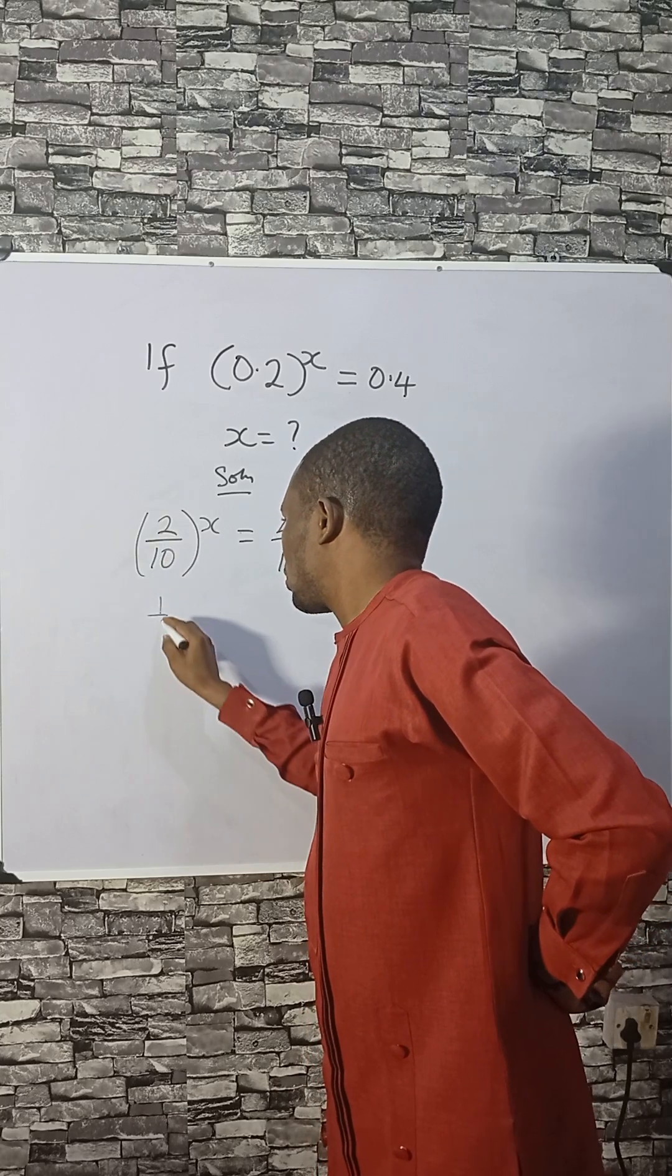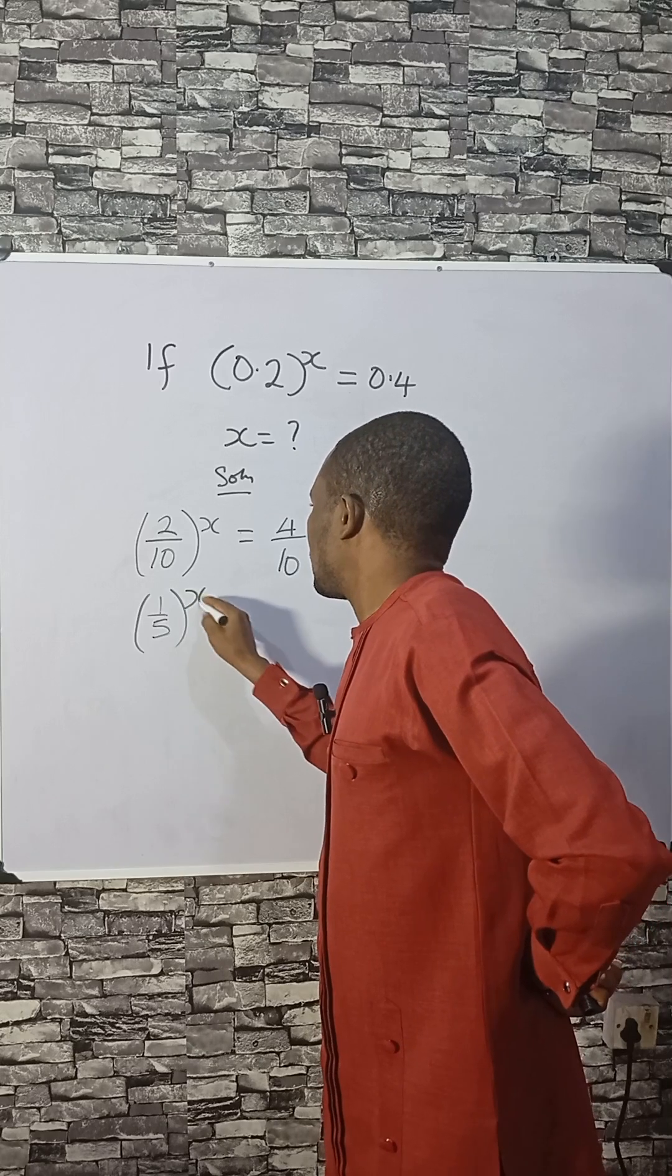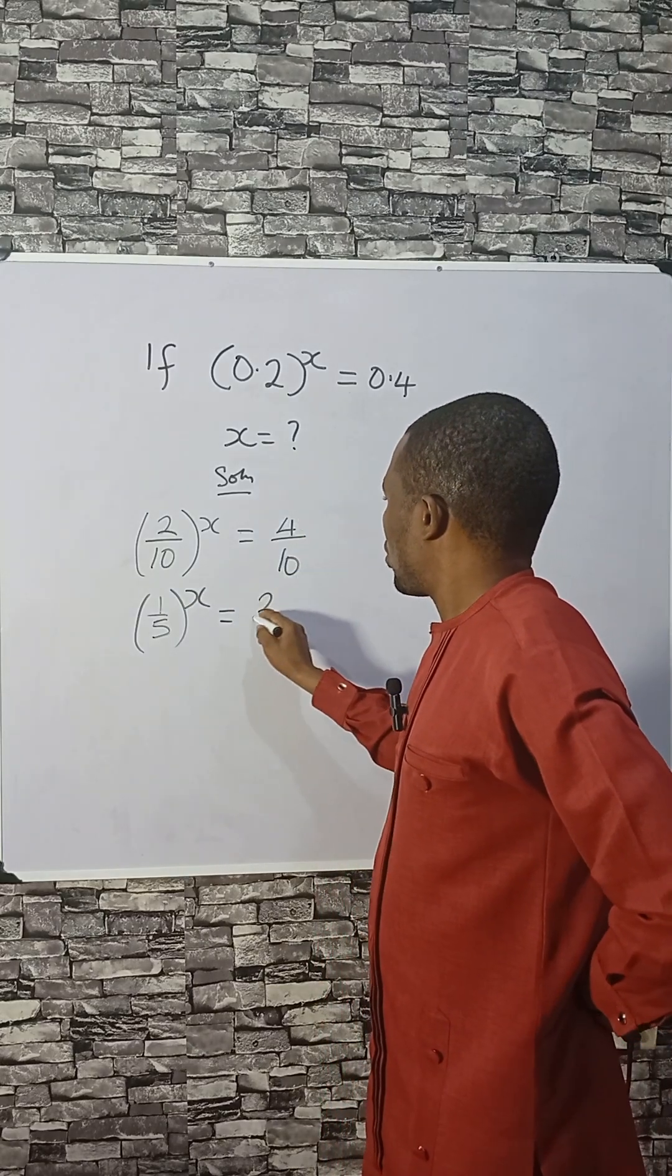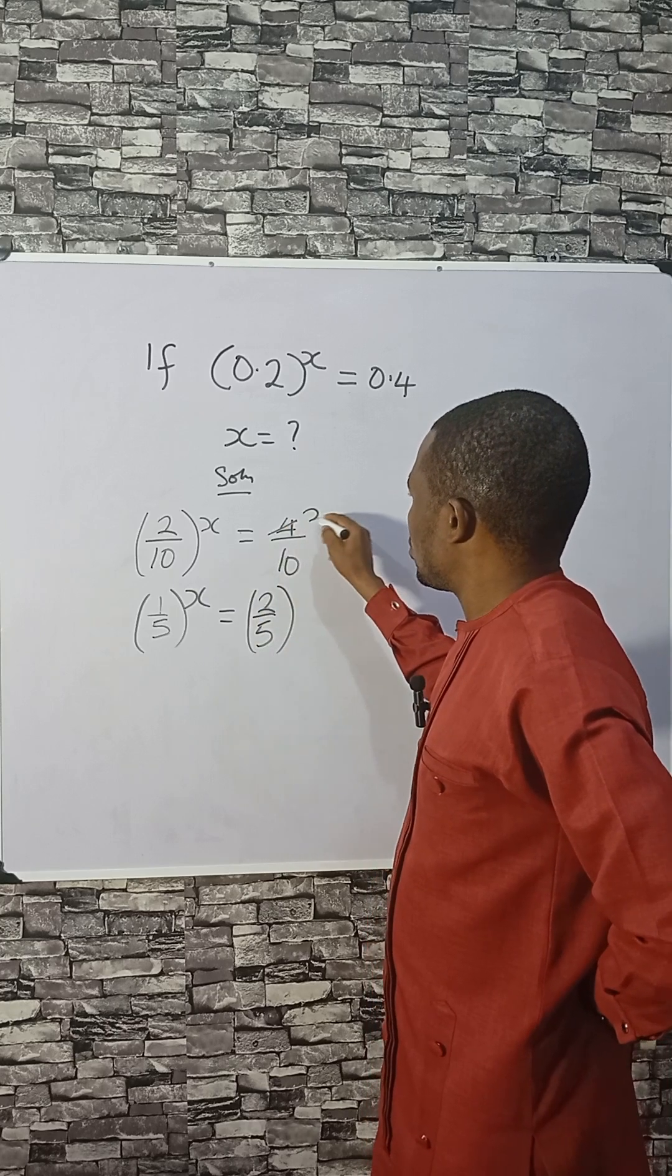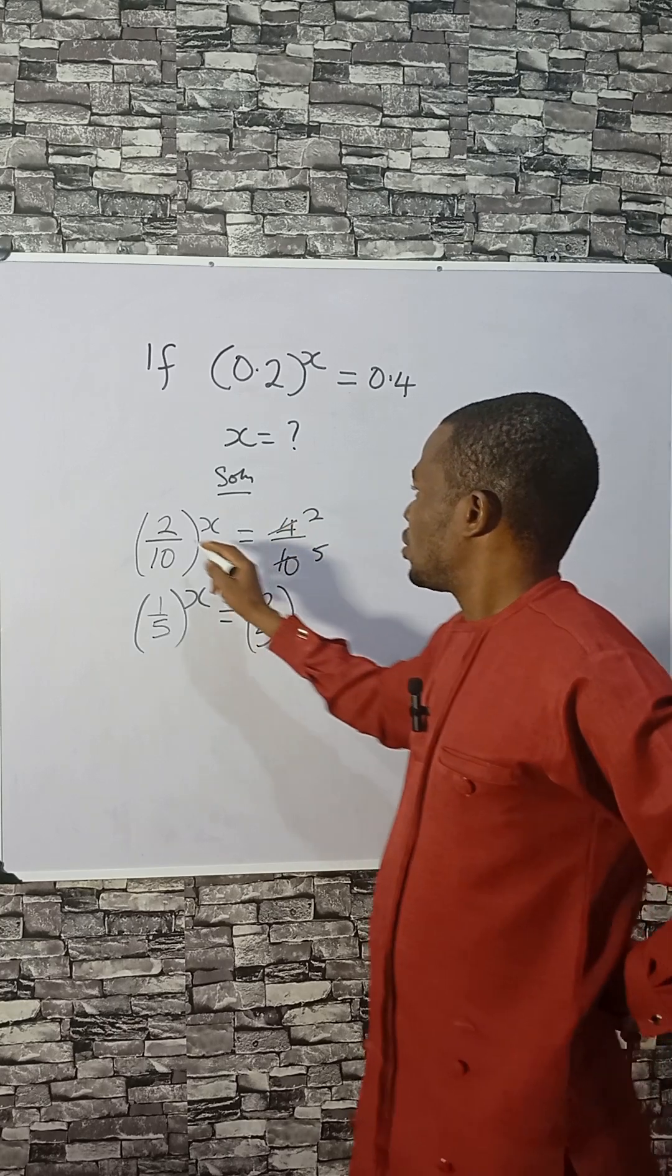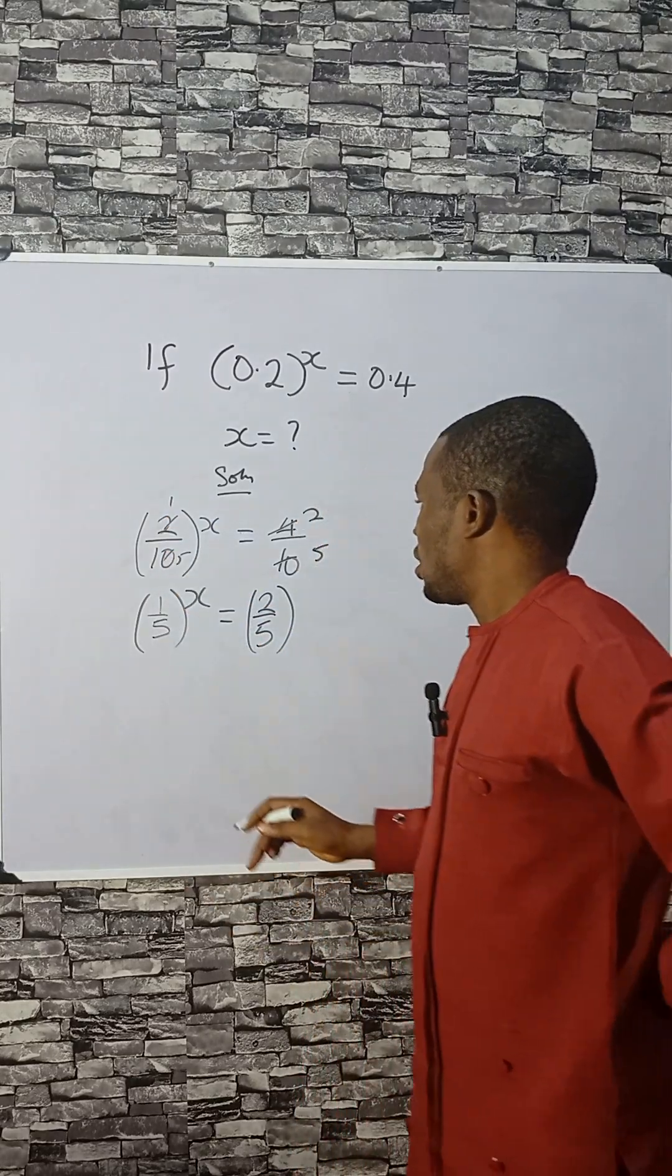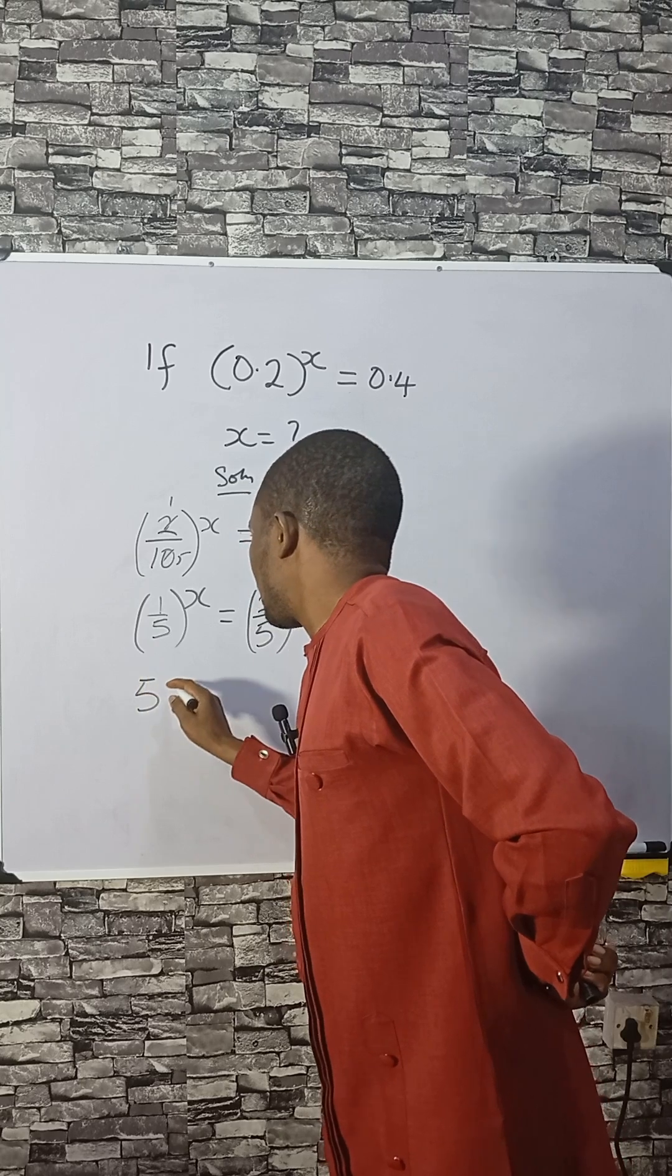Divide by that. This can be reduced to 2 over 5, because 2 can go into 2 here, 5 here, 2, 1, and 5. So we have this.